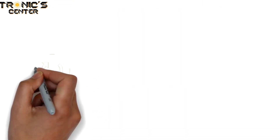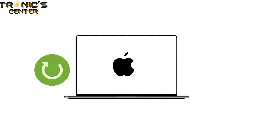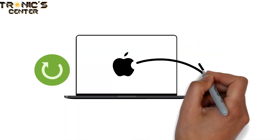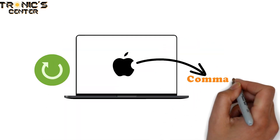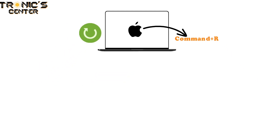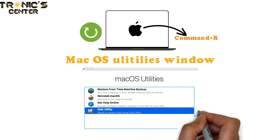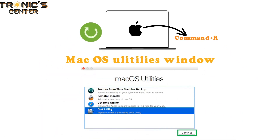Now to get started, restart your MacBook Air. As soon as the Apple logo appears when your machine is booting up, press and hold the Command and R keys on the keyboard. Keep holding them down until the MacOS Utilities window appears on your screen.